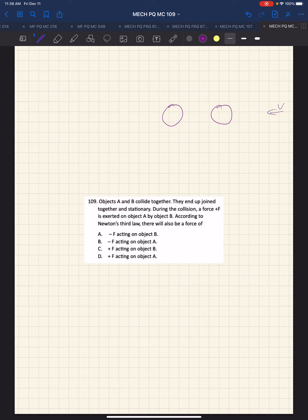This one must have had a velocity in this direction, and this one must have a velocity in that direction. If they collide together, that must be true. They end up joined together and stationary.